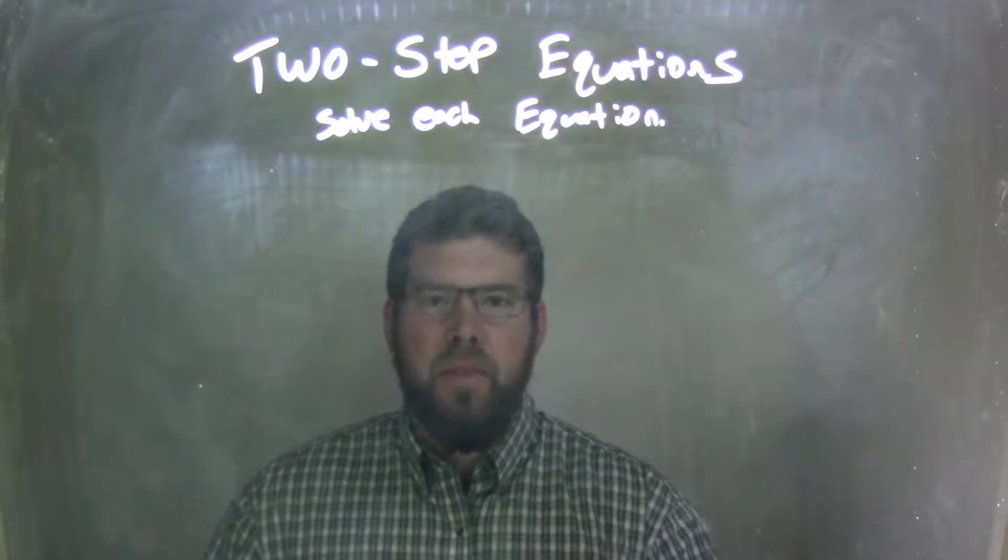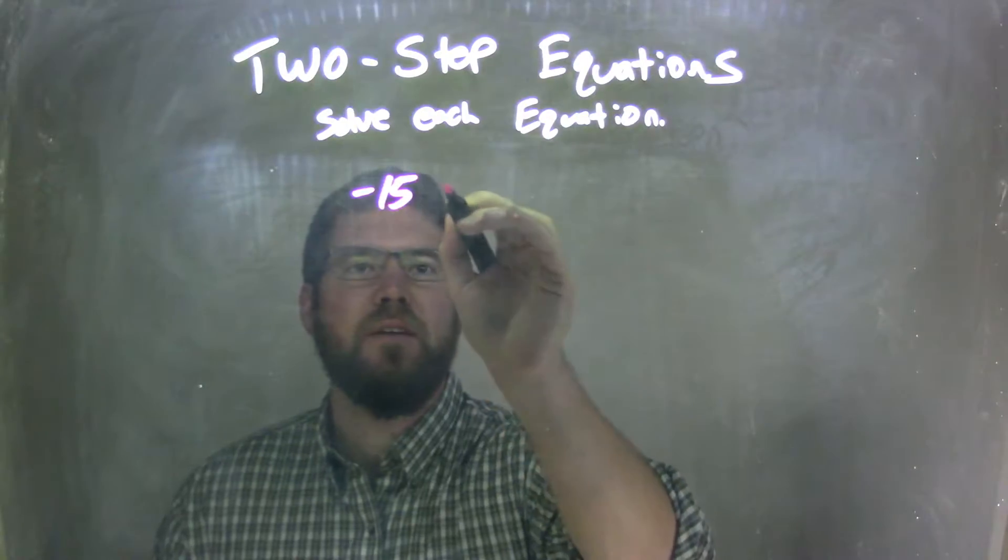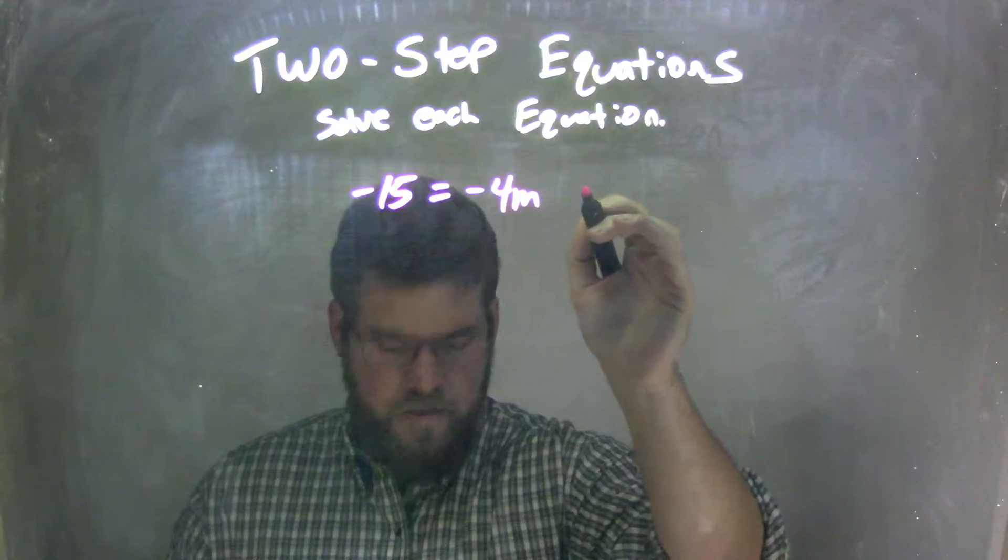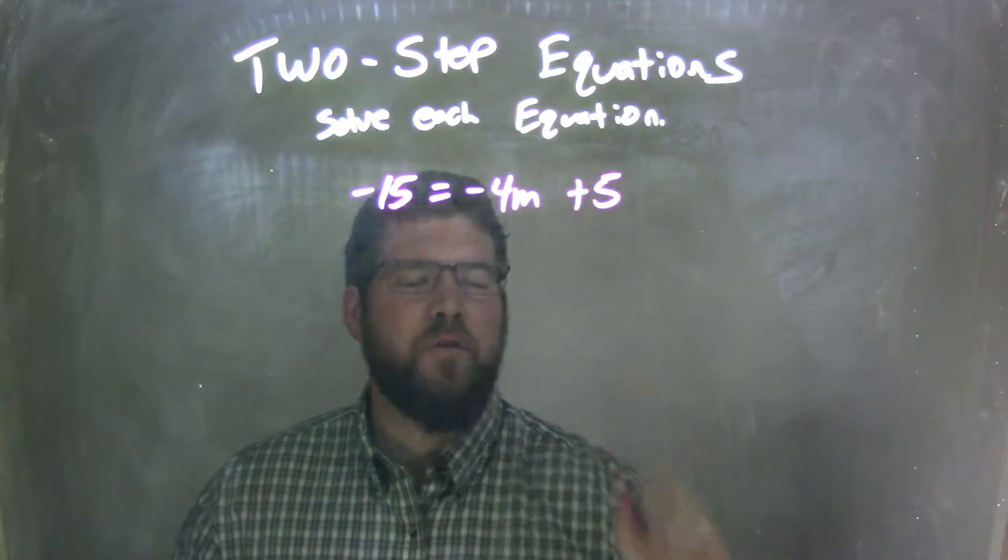So, if I was given this equation, negative 15 equals negative 4m plus 5, okay?